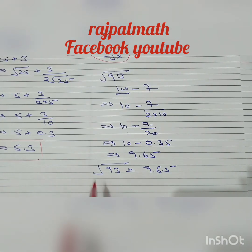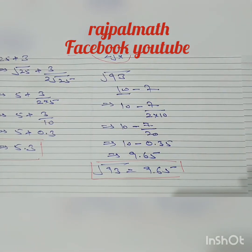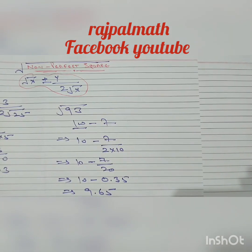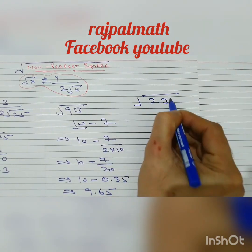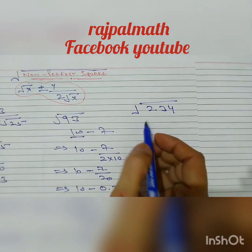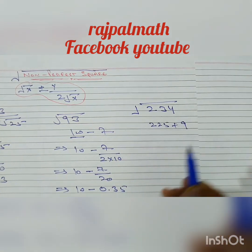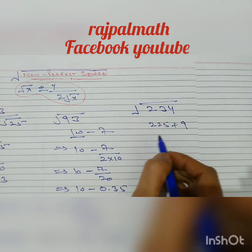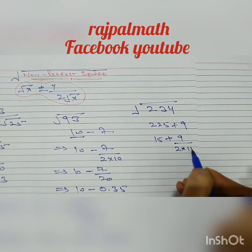10 minus 0.35 is approximately equal to 9.65. Therefore, under root of 93 equals 9.65. One more example: find the square root of 234. 234 can be written as 225 plus 9, and since 15 squared is 225, 225 is a perfect square. Applying the formula: 15 plus 9 over (2 times 15).